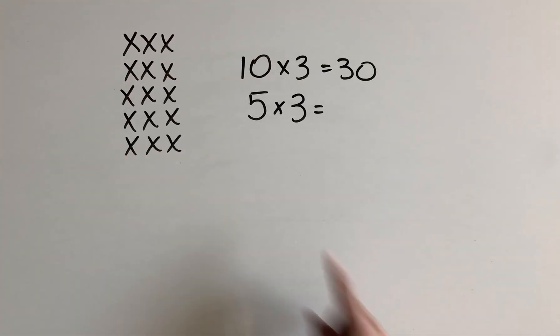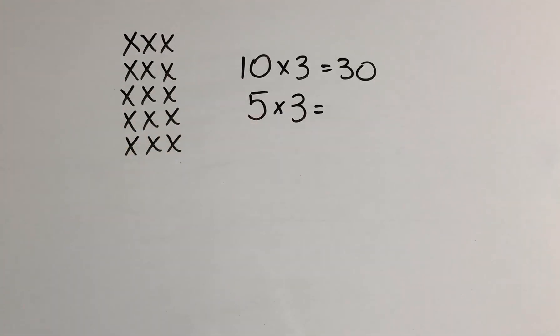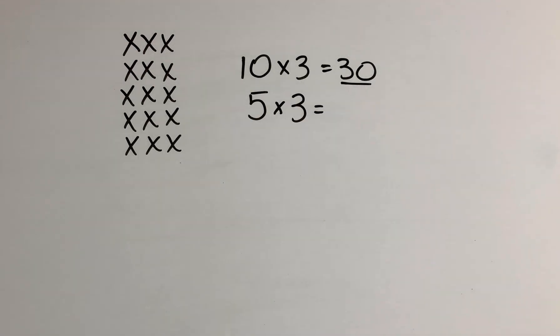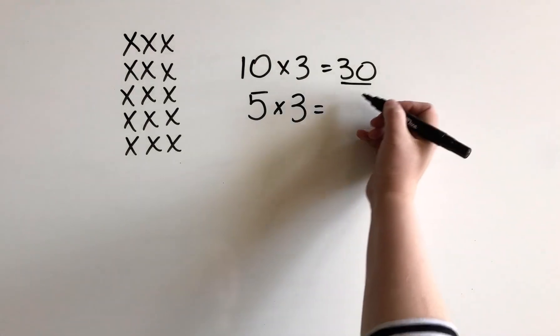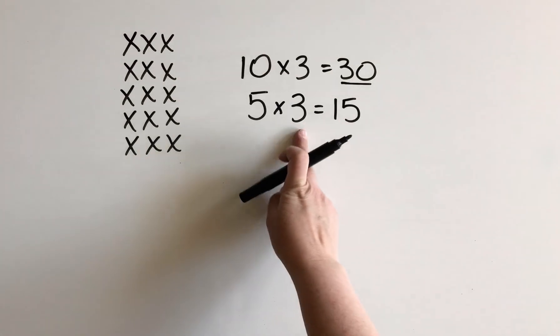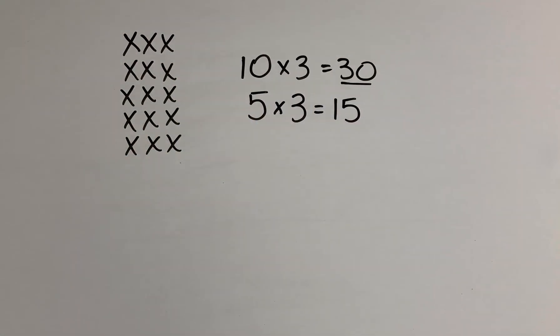Because now we only have 5 rows, not 10. So we divided the rows in half. We took half of them away. So what are we going to do to the product? We're going to take half of that product. So half of 30 is 15. So we know that 5 times 3 is going to be half of what 10 times 3 is.